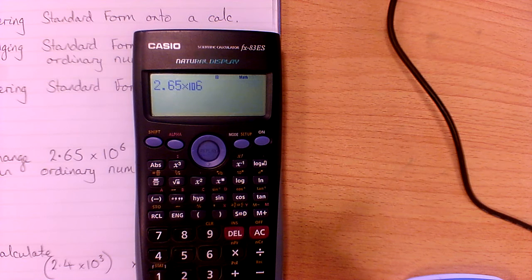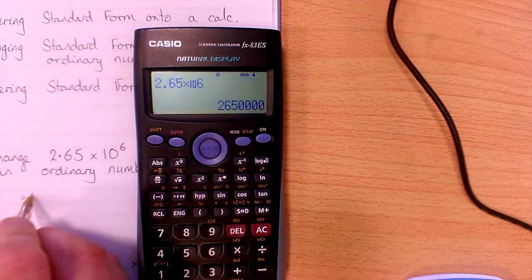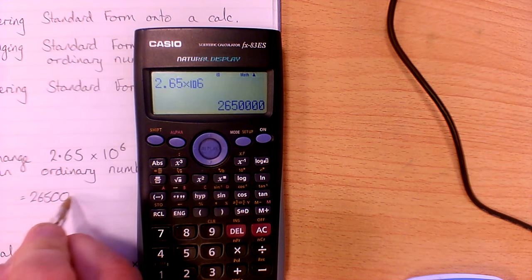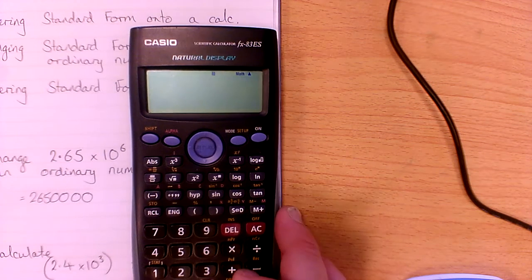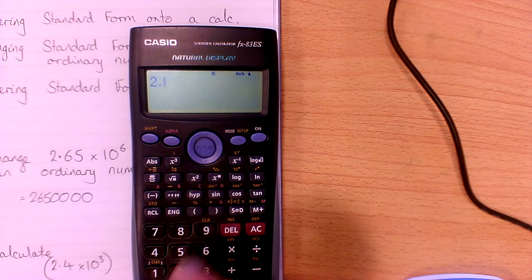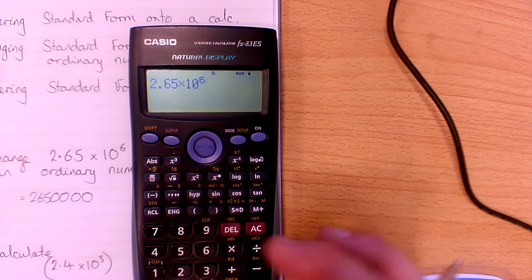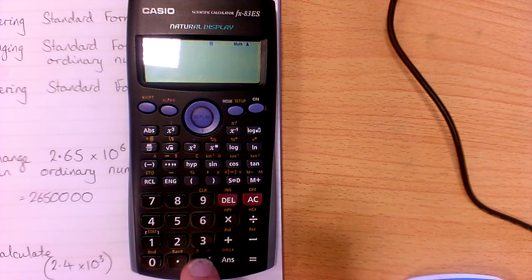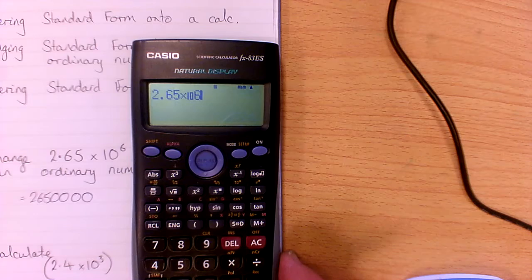To then change it, we just press equals and it gives me an answer: 2,650,000. So two different ways to do it — 2.65 times 10 to the power 6, or 2.65, use the X10X button, and just press 6, so it looks like so.